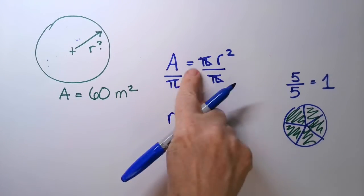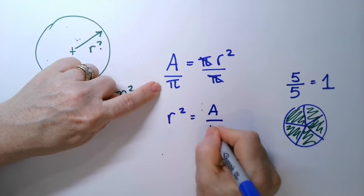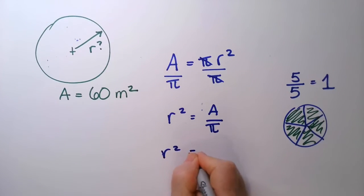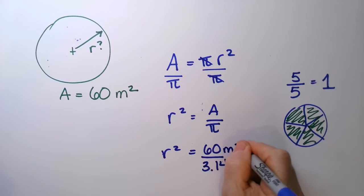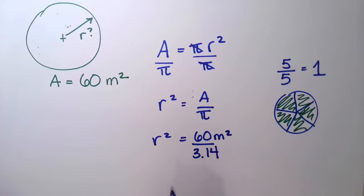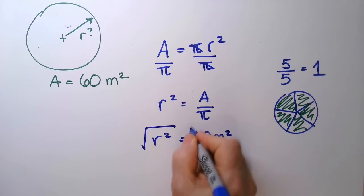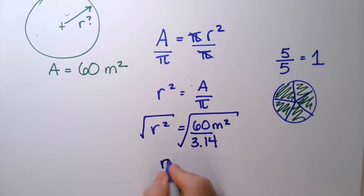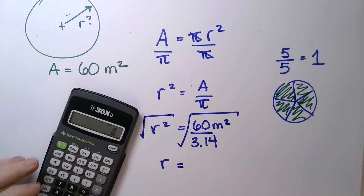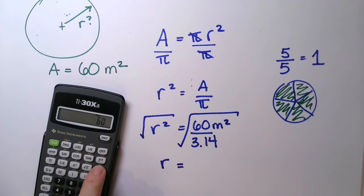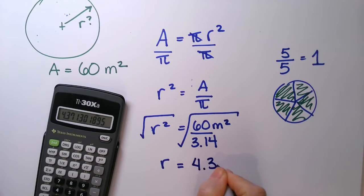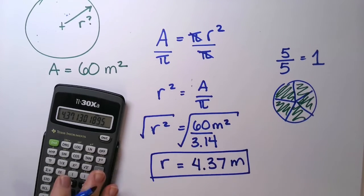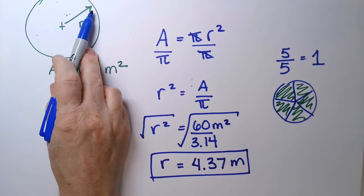So R squared equals A over pi. That means R squared is going to be 60 over 3.14, and this is meters squared. In order to find R, I'm going to take the square root of both sides — that's a button on my calculator. The square root of R squared is R. So: 60 divided by 3.14, get a number, then hit the square root button, and you get 4.37 meters. Given that area, you know the radius is 4.37 meters.